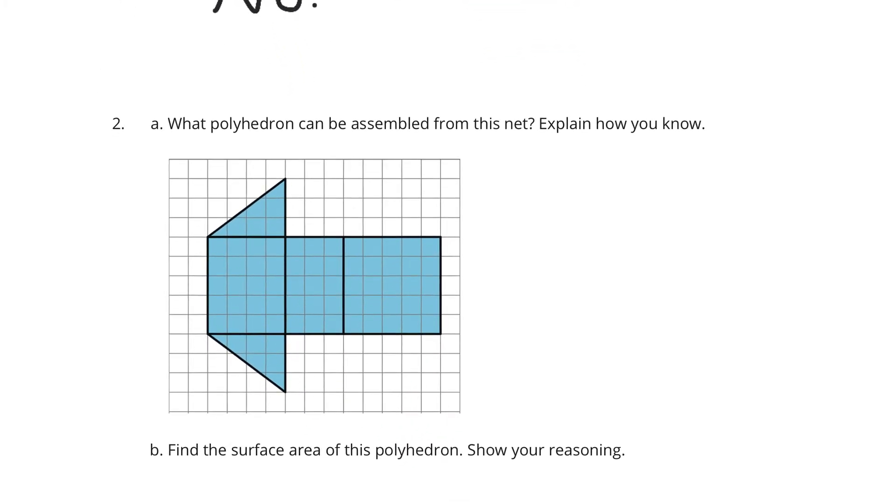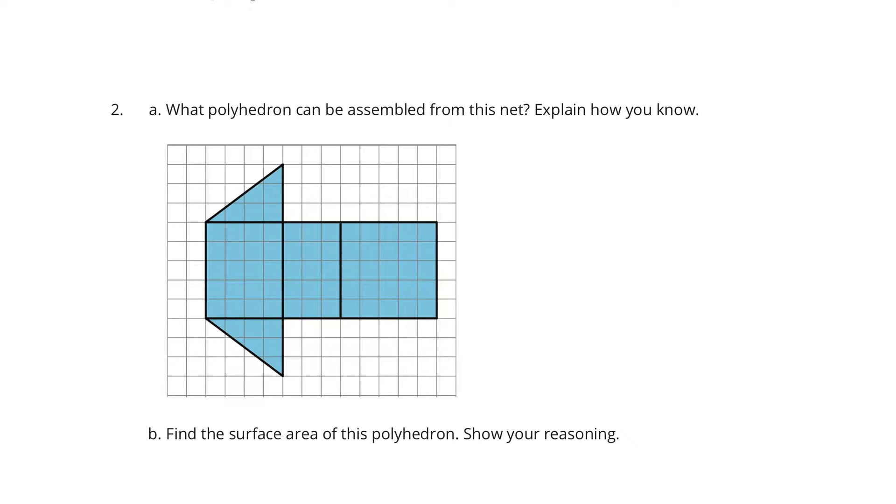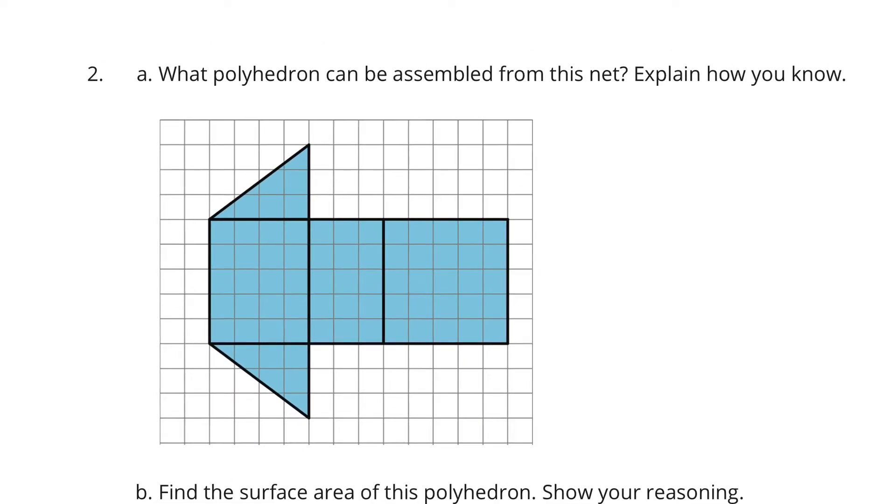Question 2. What polyhedra can be assembled from this net and explain how you know? Well, we have a bunch of rectangles and two triangles. And so if I look at those two triangles, those are going to be my bases. And so this is a triangular prism.